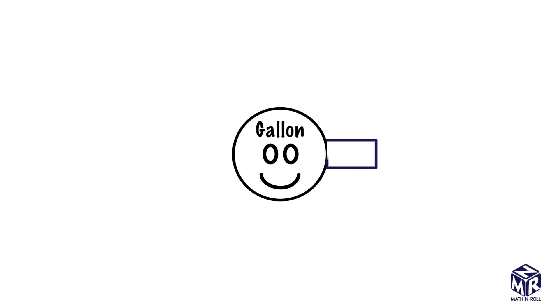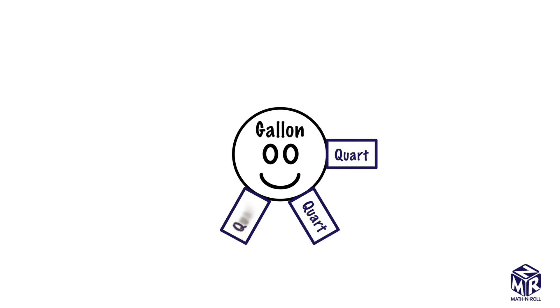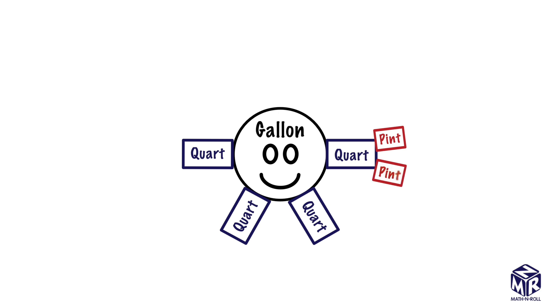One gallon has 4 quarts, so we draw 4 quarts. Each quart consists of 2 pints, so we draw 2 pints to each quart.